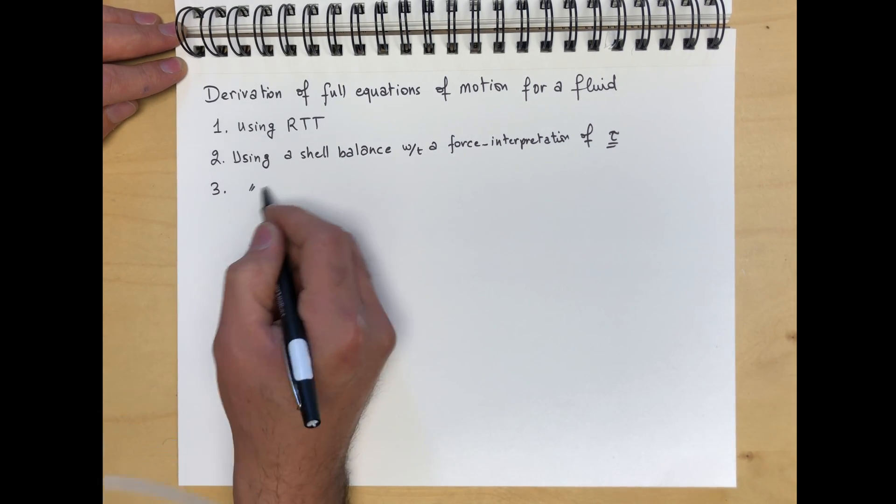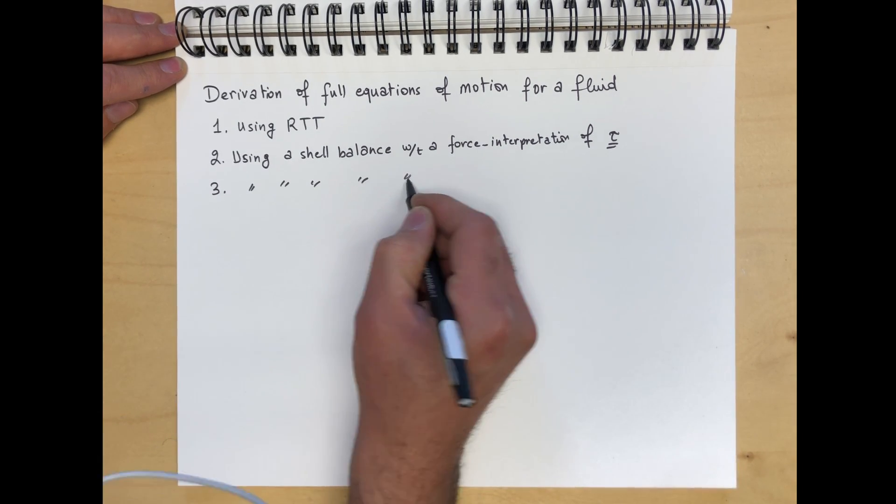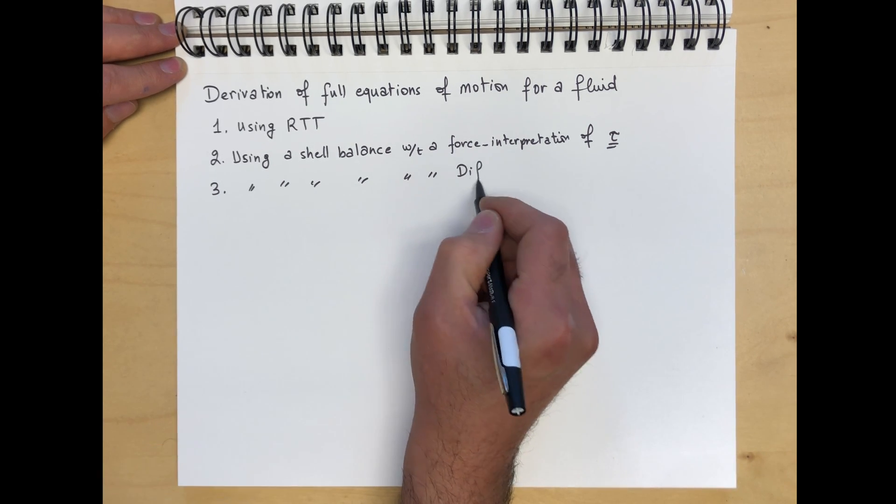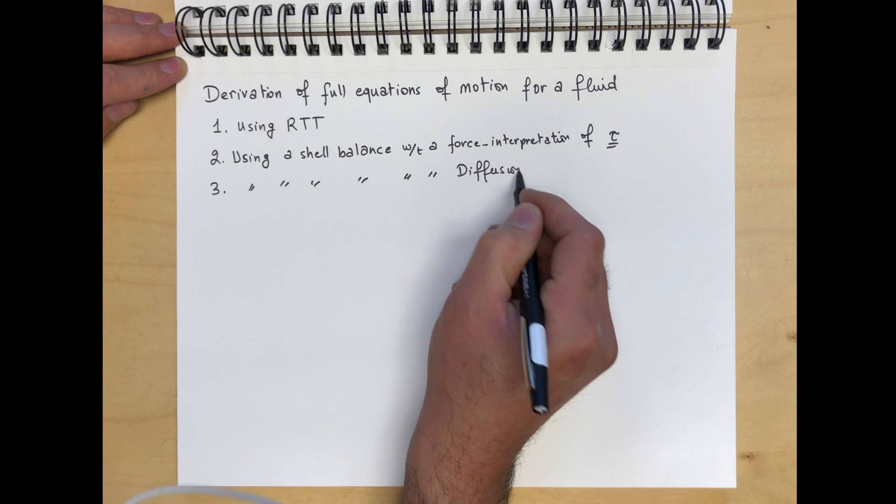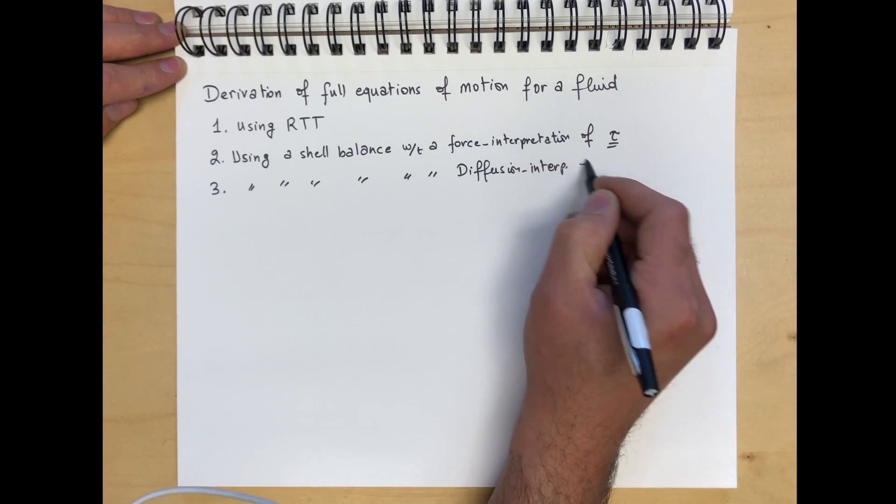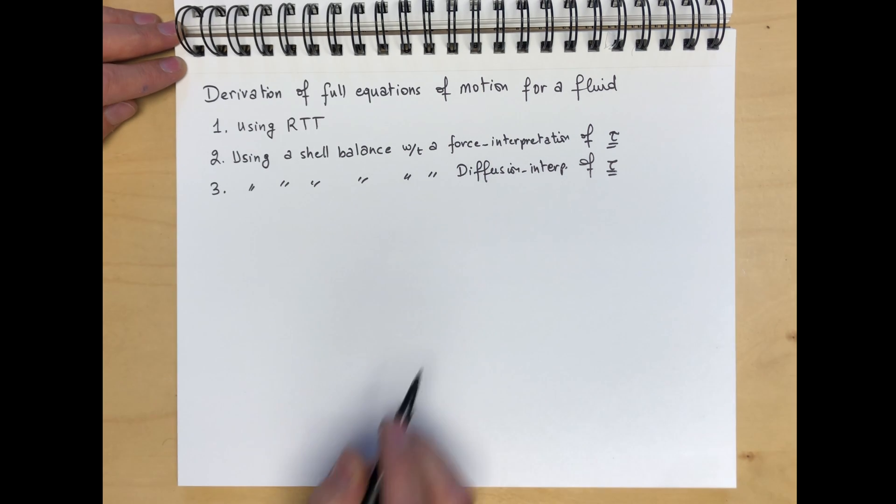And three, using a shell balance with a diffusion, momentum diffusion, with a diffusion interpretation of tau.